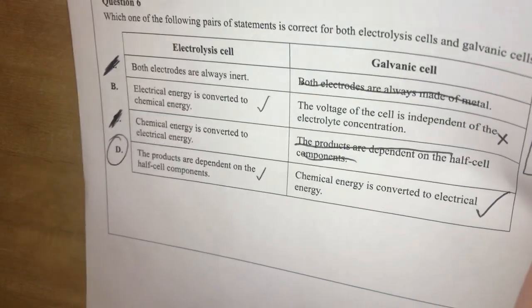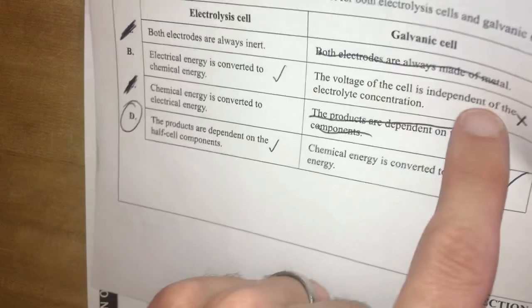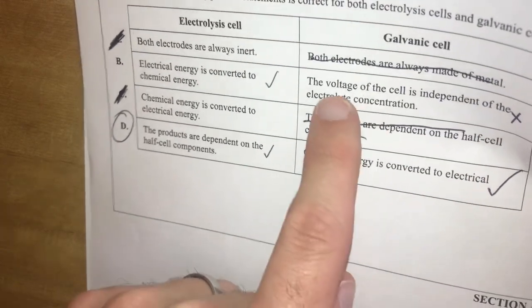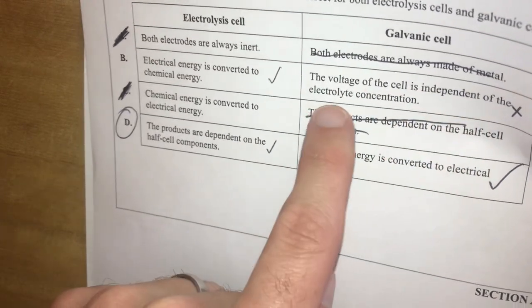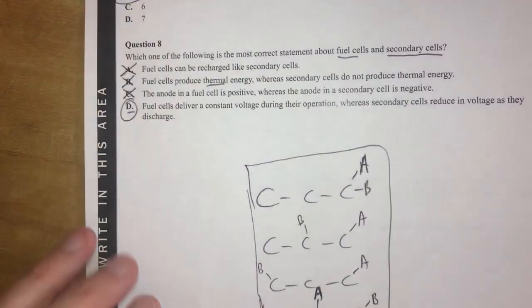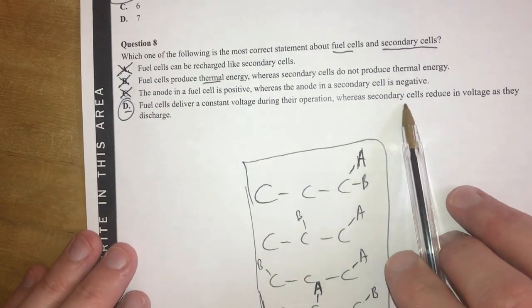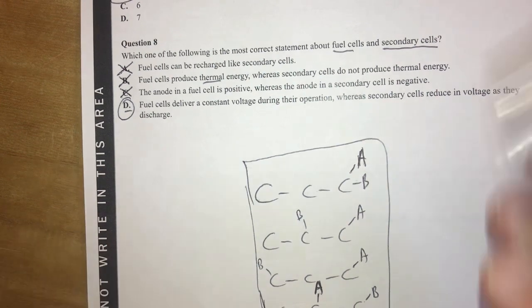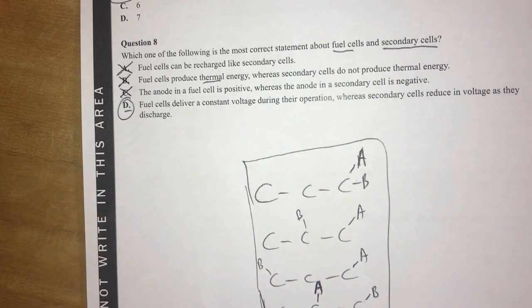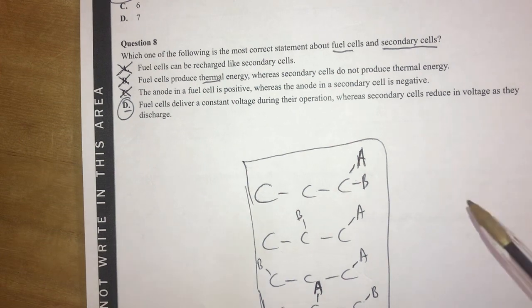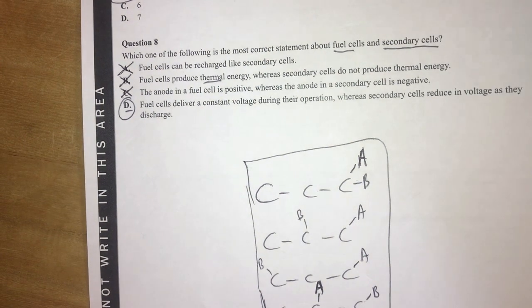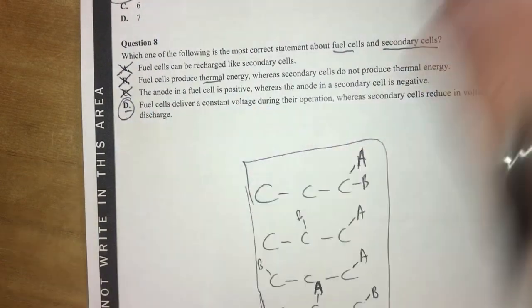All right. Cell voltage is independent of electrolyte concentration. No. Cell voltage is dependent on electrical concentration. So therefore, as we use our secondary cell, okay, as our concentration decreases, so does the voltage. Or the voltage just changes. We don't know if it decreases. It just is different. Probably does decrease, but that's the idea there. So D is the answer for question 8.